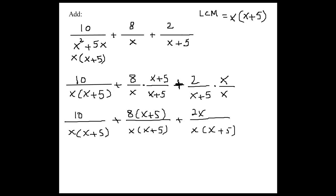So now we have the denominator the same for all of them. So we can add them. Add or subtract them. In this case, adding. So we have to keep x times x plus 5 here. And then we simply add what we have at the top of the fractions.